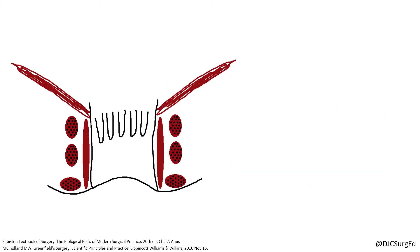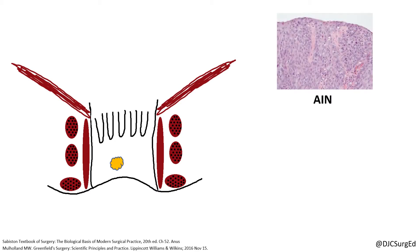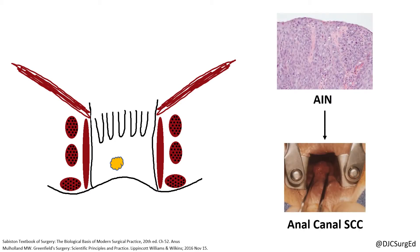Anal intraepithelial neoplasia is a pre-malignant lesion with risk factors including HPVs 16 and 18, as well as smoking, immunosuppression, receptive anal intercourse, and HIV-positive status. Most primary cancers of the anal canal are of squamous cell origin, however, less common tumors can include adenocarcinoma and anal melanoma.